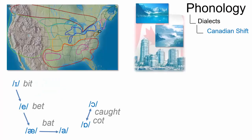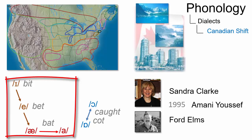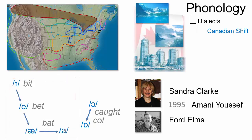The Canadian shift was first described by Clark, Elms and Youssef in 1995 as a chain shift of vowels. Although it is primarily common in Canadian English, it can also be found in some other dialects, like the younger Pacific Northwest English.